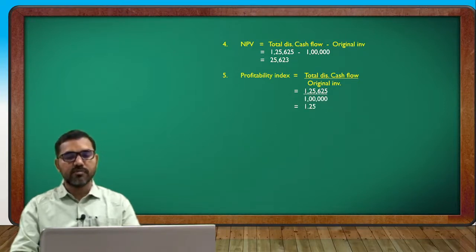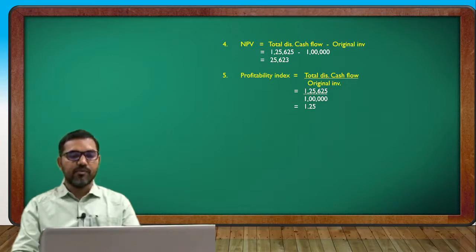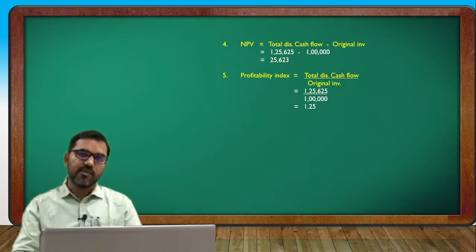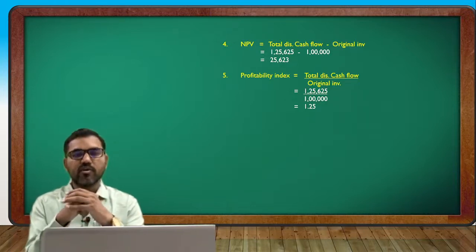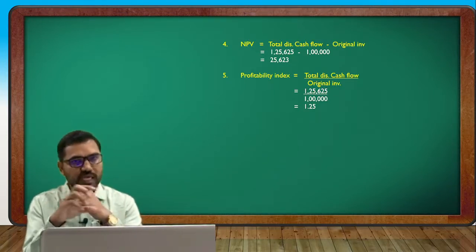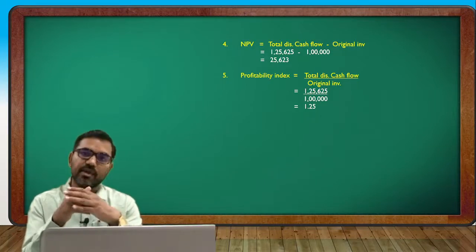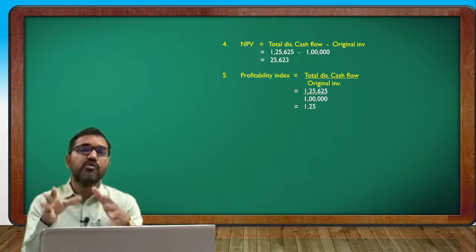The project is acceptable because the present value is positive and the profitability index is more than one — meaning the project is profitable and we can accept it. As discussed in the last question, the only change in this question is the depreciation calculation. The cash flow format and formulas remain the same. Depreciation is the most important factor — once you calculate it correctly, the rest of the cash flow, discounted cash flow, and formula application follows easily.